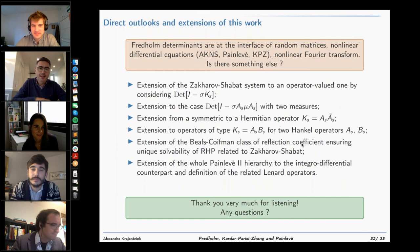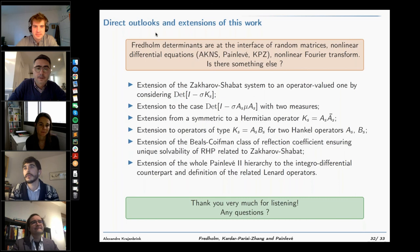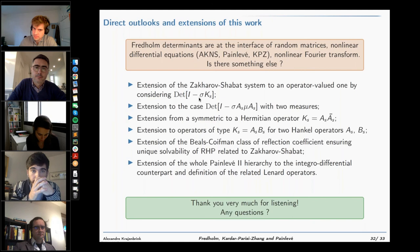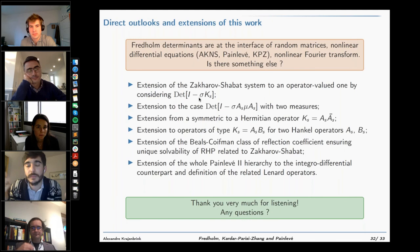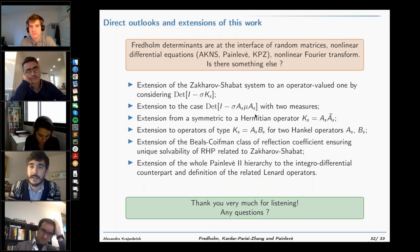Question: This case with two different measures — do you have some applications in mind? Answer: When you have a single measure, in physics there are two interpretations of these Fredholm determinants. We can talk about fermions: either you can consider fermions at finite temperature, or you can consider counting statistics of the fermions, which we interpret as linear statistics of a determinantal point process. If you had two measures, you could consider counting statistics of fermions at finite temperature — that would be an application.